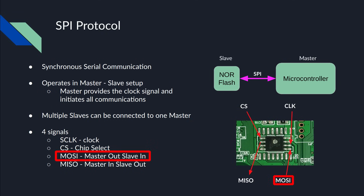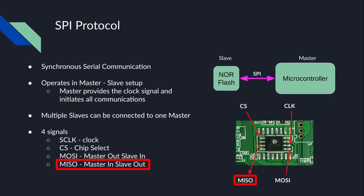The fourth wire is MISO — Master In, Slave Out — where the slave sends the data back to the master.